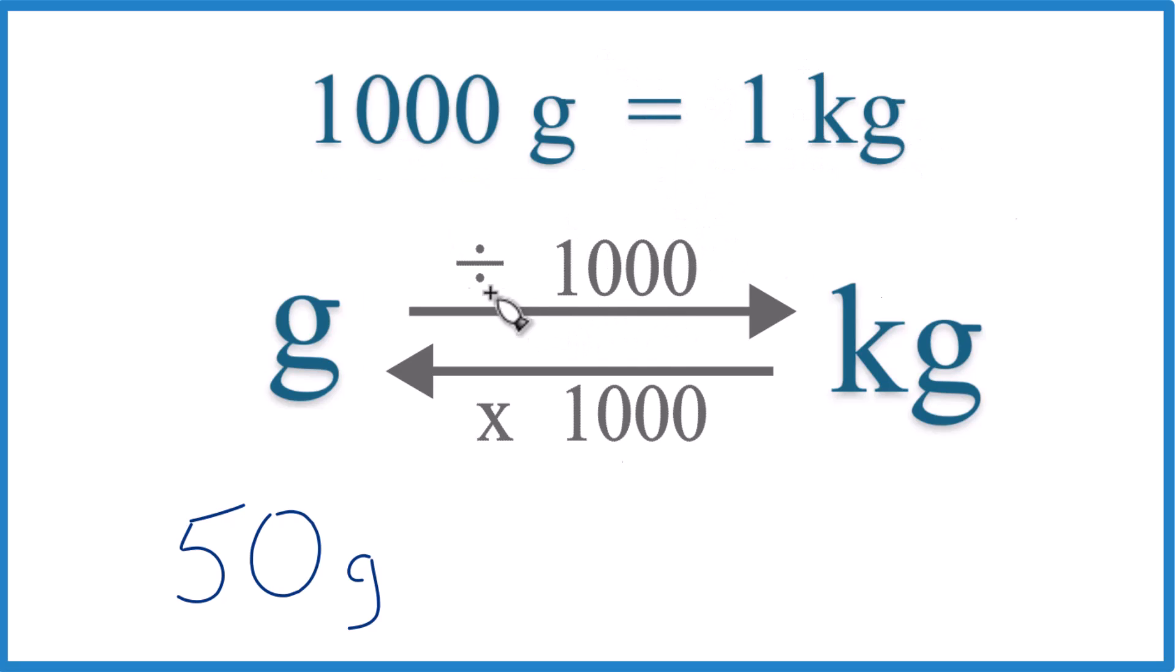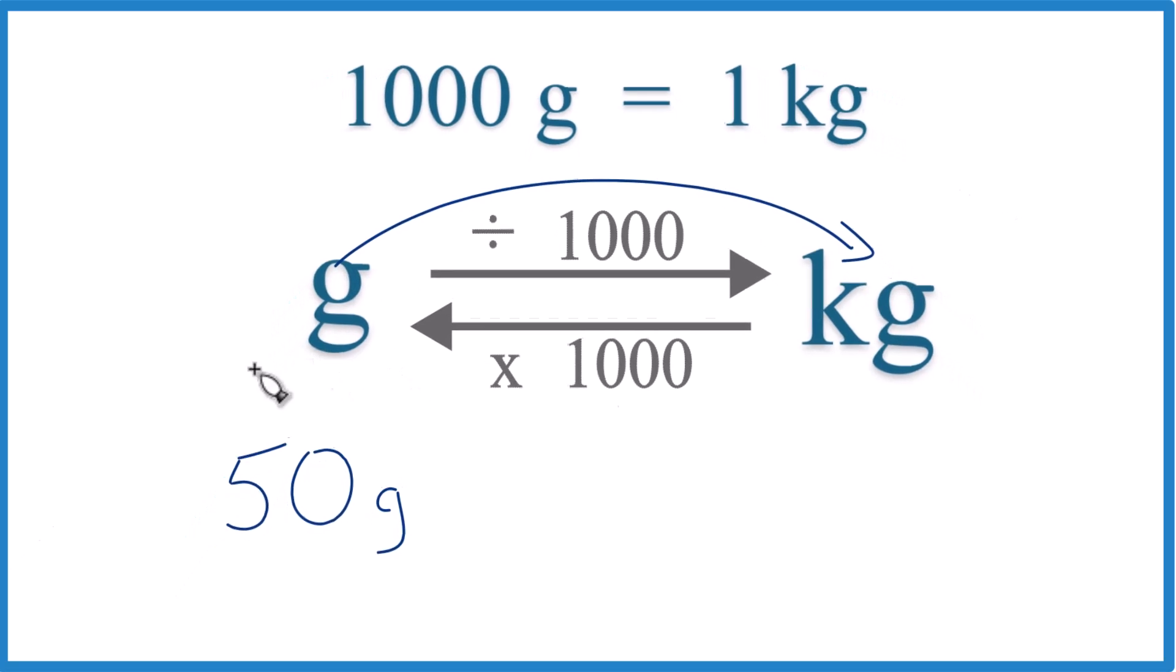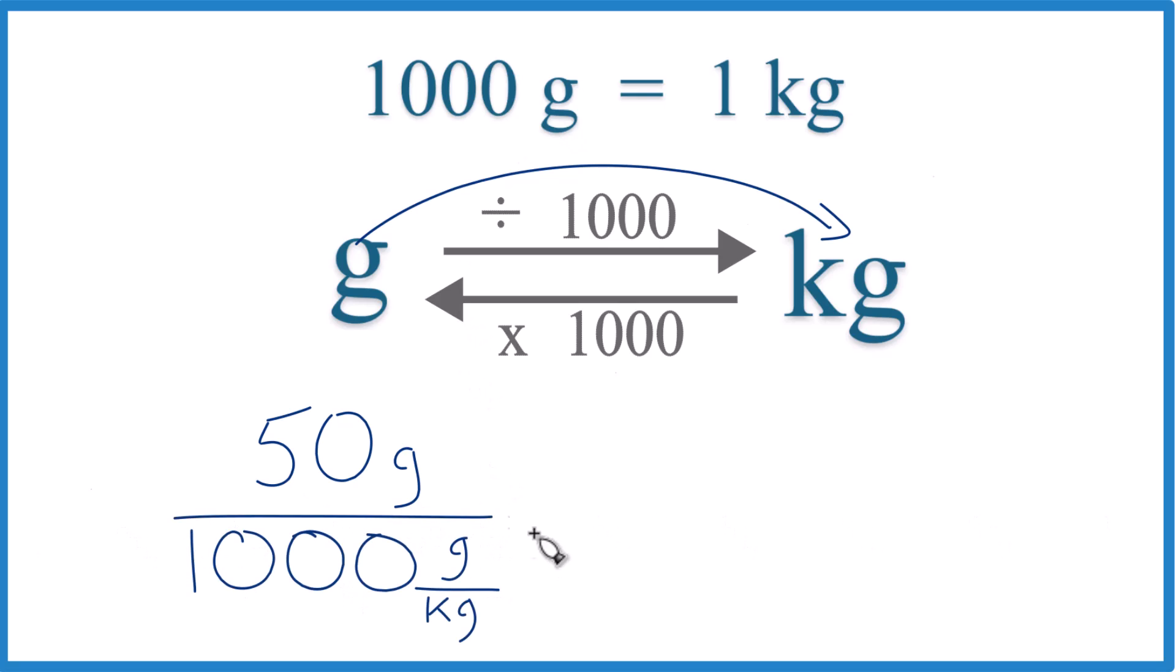So what we can do, if we're going from grams to kilograms, we divide by 1,000, like this. And that's 1,000 grams in one kilogram. That's our conversion factor.